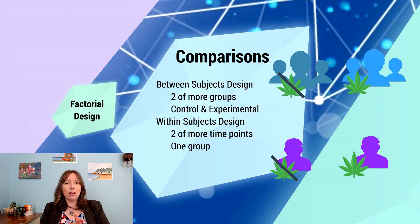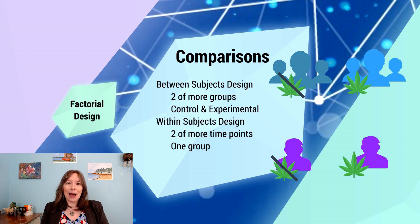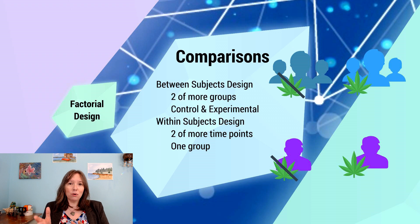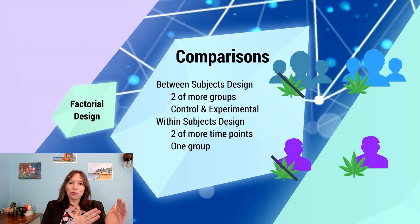In the between-subjects design, some people come to the lab and get a dosage of cannabis and some do not. That lack of dosage also changes the procedure — they're not experiencing the same things in the lab. One way to address this is through a placebo. For example, everyone receives a brownie, but some have cannabis in theirs and some do not, making the procedure more similar for everyone.